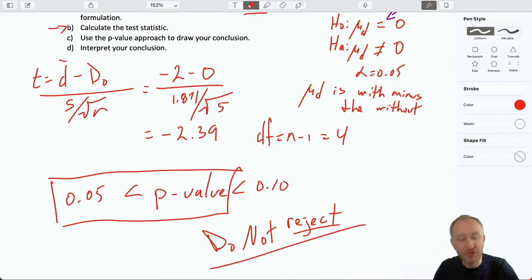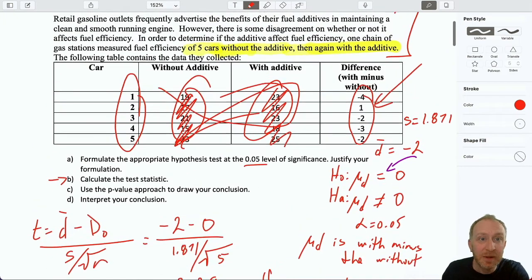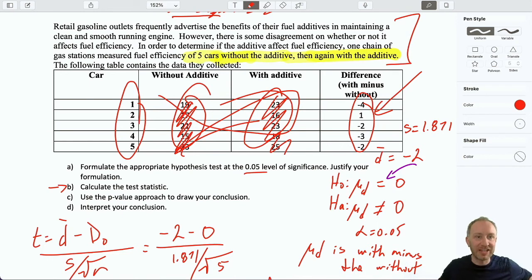Because here, we do not reject the null hypotheses. Which means we have insufficient evidence to show that there is any impact on average fuel efficiency from the use of this additive. We're unable to show that the use of this additive has any impact on average fuel efficiency. So, that's it. We've got our p-value. We threw in a critical value for good measure. And our interpretation.